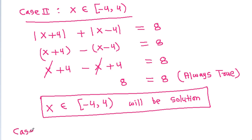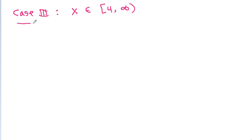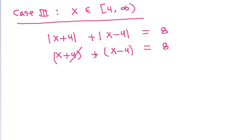In Case 3, when x belongs from closed 4 to infinity, then we have |x+4| + |x-4| = 8. In Case 3, |x+4| is x+4 and |x-4| is x-4, so (x+4) + (x-4) = 8. The constants get cancelled, leaving 2x = 8, so x = 4.